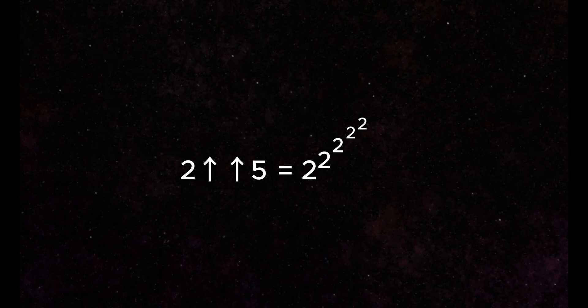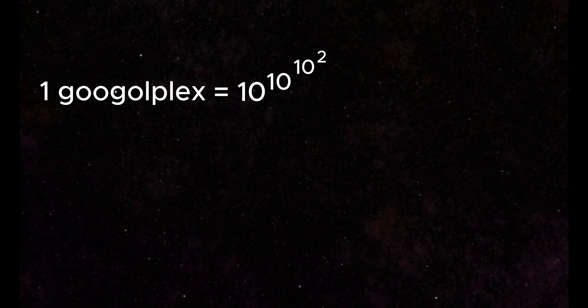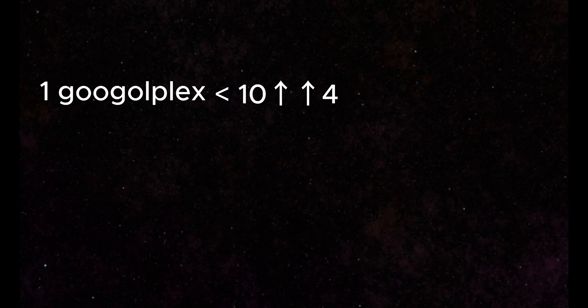This allows us to rewrite several of the large numbers we have already come across using more compact notation. One Googolplex is a stack of tens that is more than three high, but not quite four high. So we write, ten arrow arrow four.